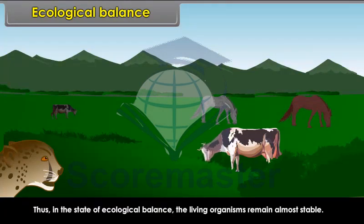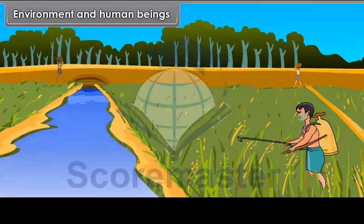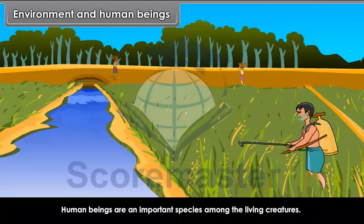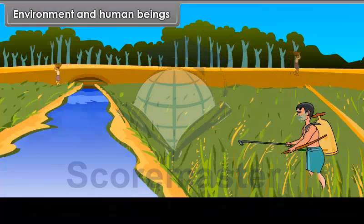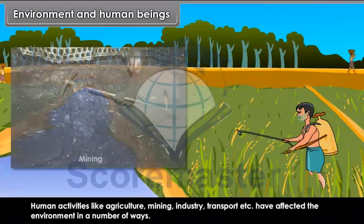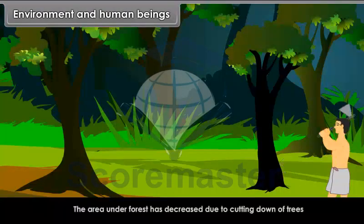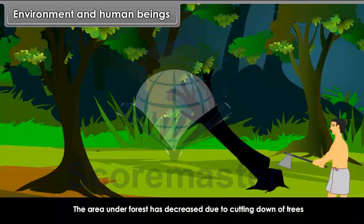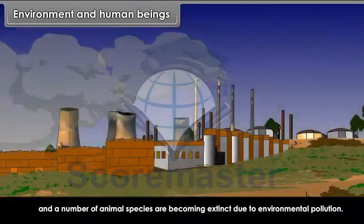Environment and human beings. Human beings are an important species among the living creatures. They are capable of influencing and changing their environment through their activities. Human activities like agriculture, mining, industry, transport, etc. have affected the environment in a number of ways. The area under forest has decreased due to cutting down of trees, and the number of animal species are becoming extinct due to environmental pollution. Human activities are aimed at satisfying increasing needs from the environment.